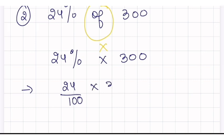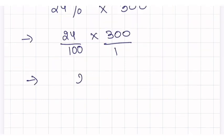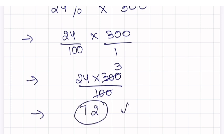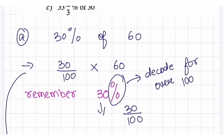And what we're going to do is divide 300 by 100, and this is going to give us 24 times 3. And that's going to give us 72, and that's going to be your answer.